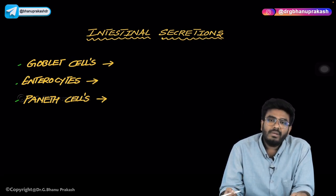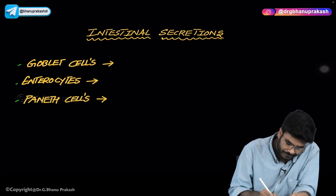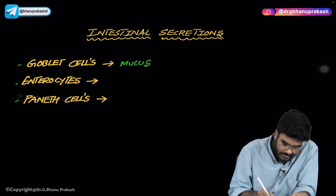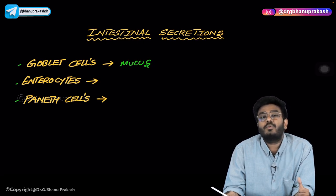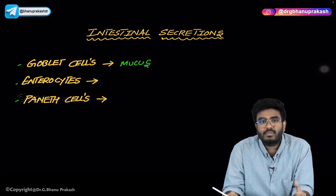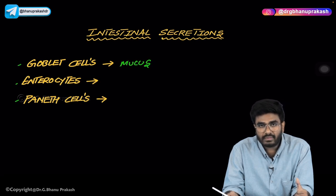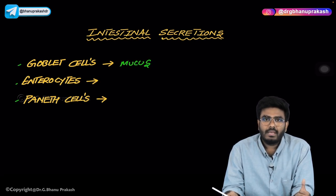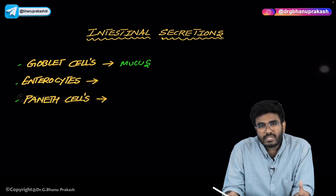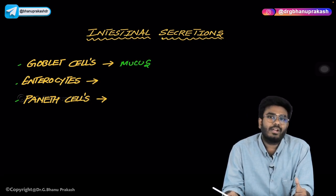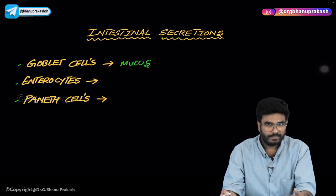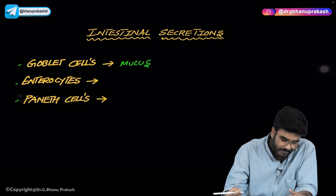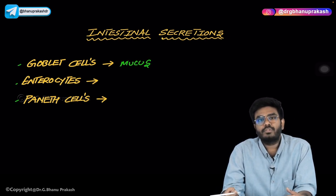Goblet cells are the ones associated with the production of mucus. To recap: the cells which produce mucus in the stomach are surface mucus cells, also called foveolar cells. The cells which produce mucus in the duodenum are called Brunner glands. In the same way, goblet cells are the ones which produce mucus in the intestines.